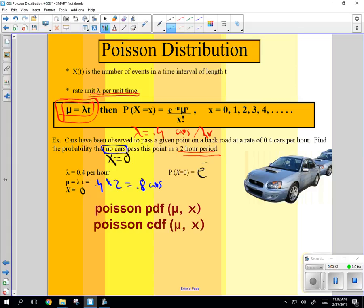E to the minus mu, which is 0.8 times mu, which is 0.8, to the 0, because there are 0 cars, over 0 factorial. And that's just going to be e to the negative 0.8, because all these are 1. And you could calculate that. That's the probability.